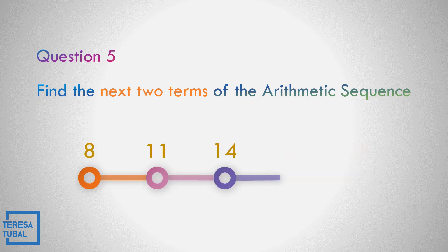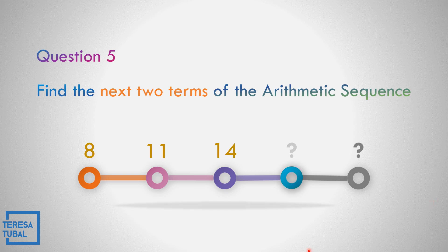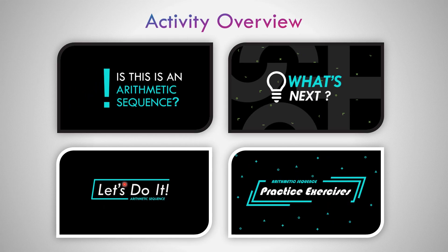Question number 5: In the sequence 8, 11, and 14 — what is the next two terms? Correct. The answer is 17 and 20, because the common difference is 3. How to get 3? 11 minus 8 equals positive 3. So the common difference is 3.